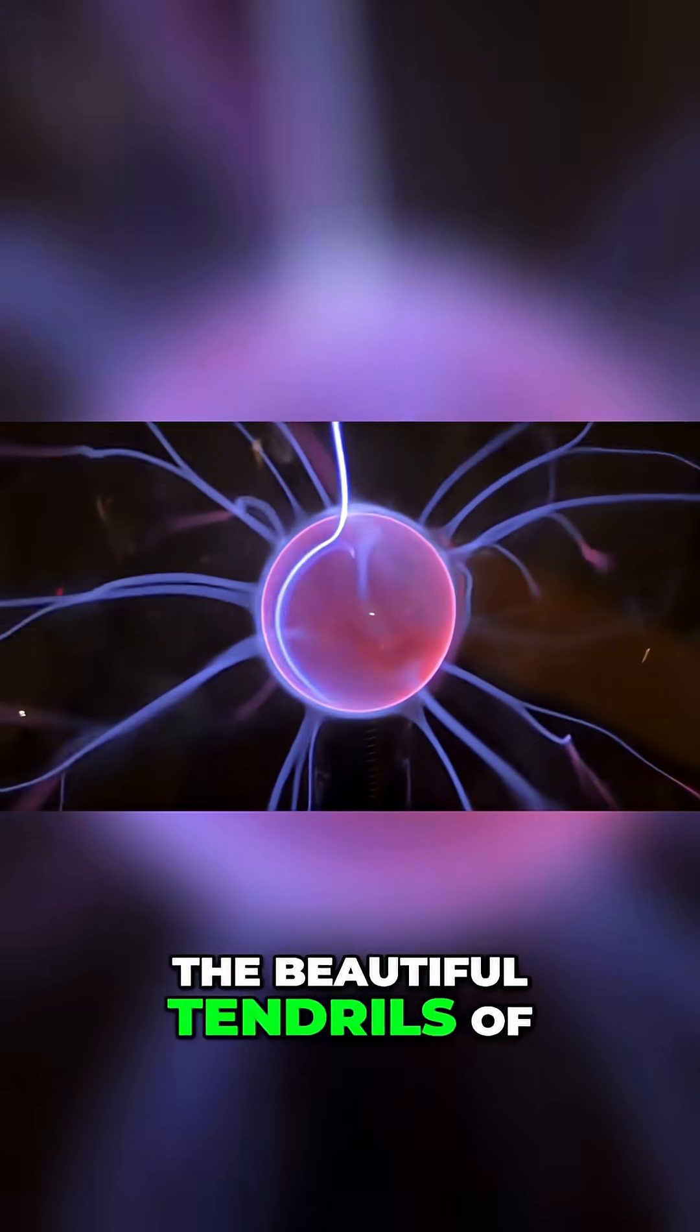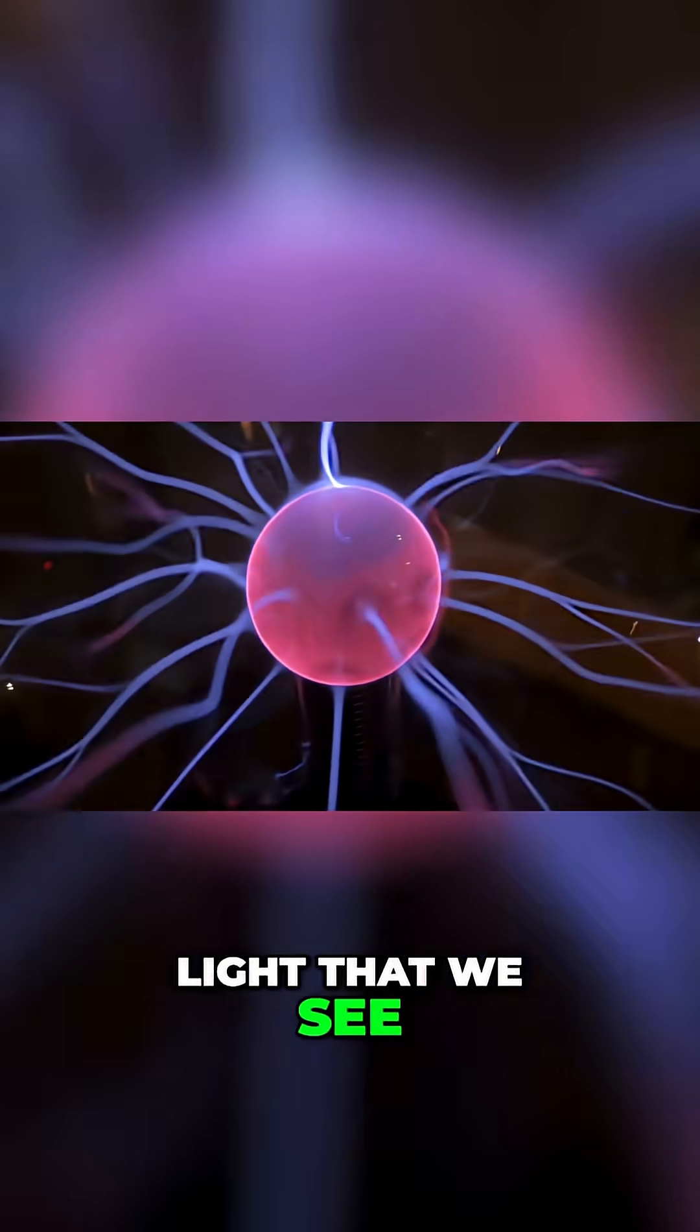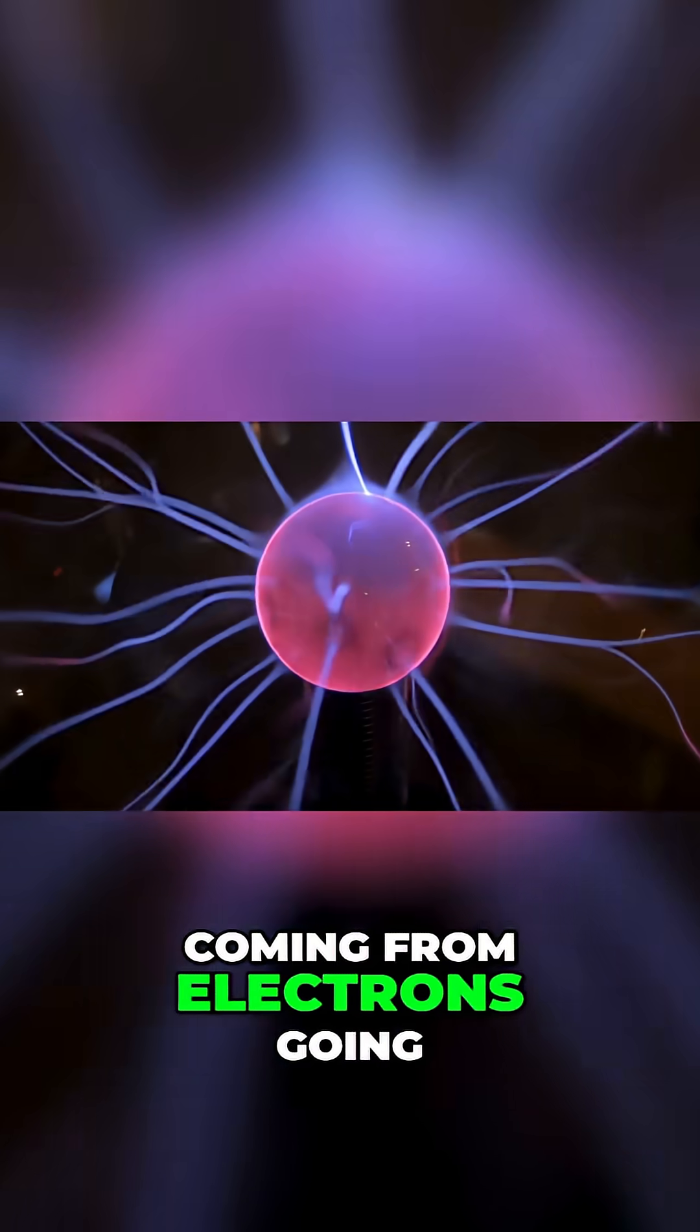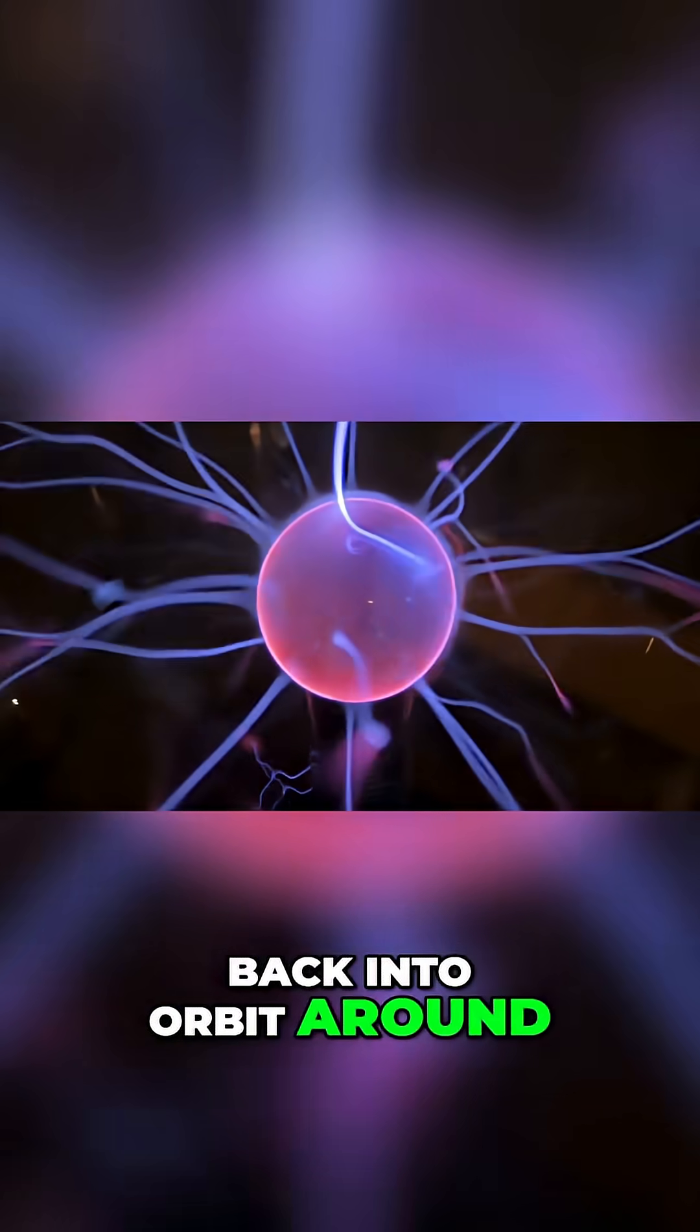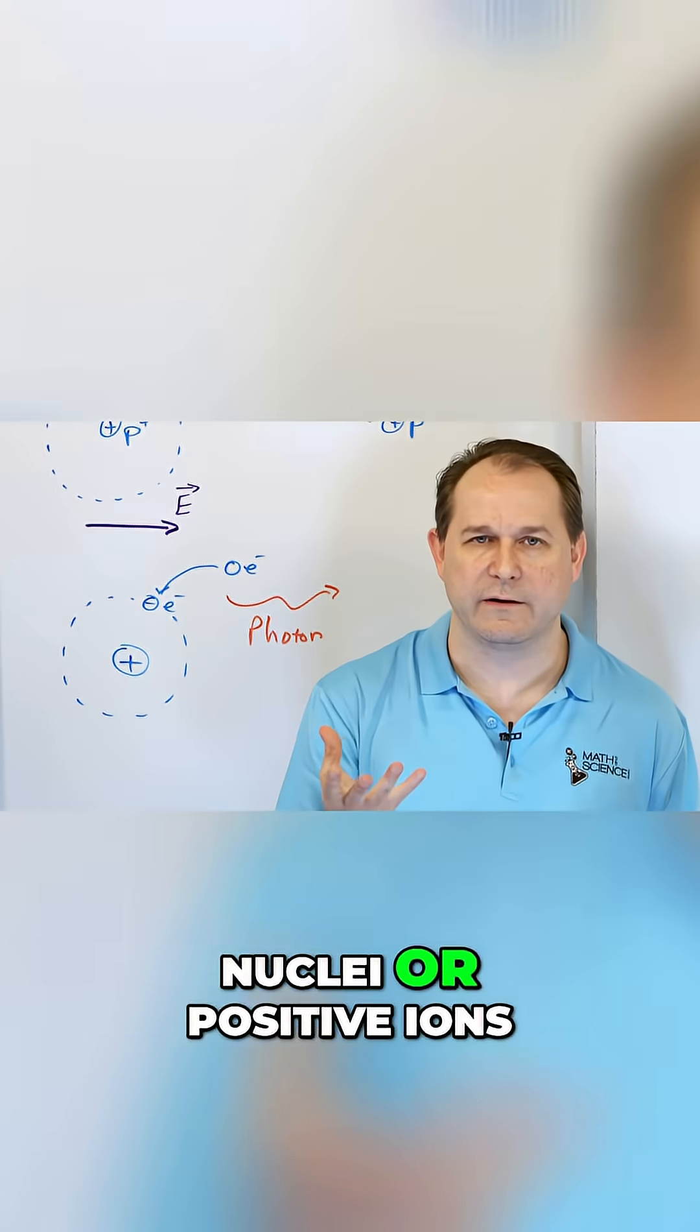In the plasma ball, the beautiful tendrils of light that we see, those are the photons coming from electrons going back into orbit around some of the other nuclei or positive ions.